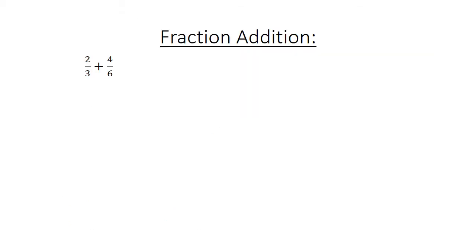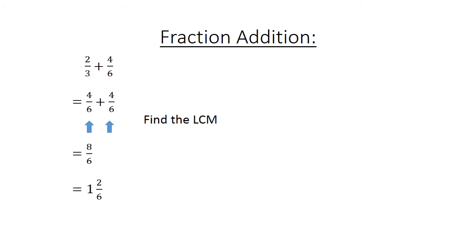Fraction addition: 2 over 3 plus 4 over 6. Find the lowest common multiple: 4 over 6 plus 4 over 6 equals 8 over 6. This equals 1 and 2 over 6, which simplifies to 1 and 1 over 3.